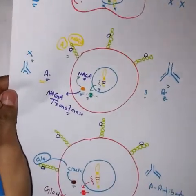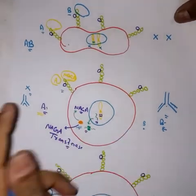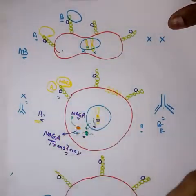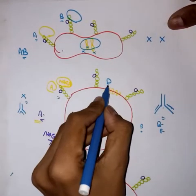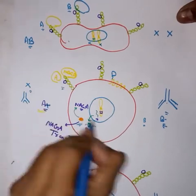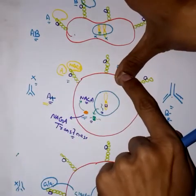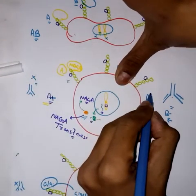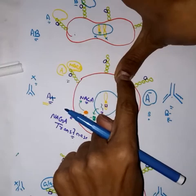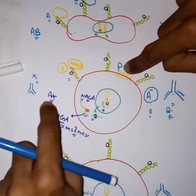For example, if this patient has A antigen, the blood group is A. But if it also has D antigen, this individual will have A positive blood group. But if it has A antigen but does not have D antigen, the individual will have A negative blood group. If it has A antigen and also has D antigen, it will be A positive; if it has A antigen but no D antigen, it will be A negative.